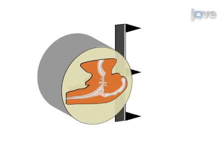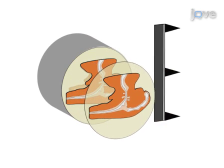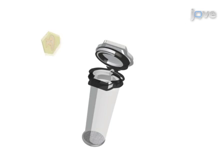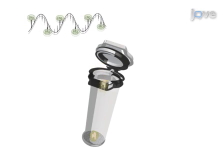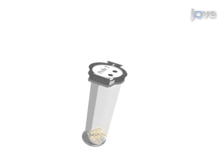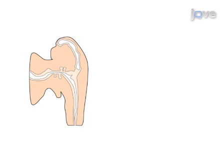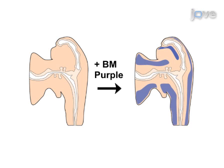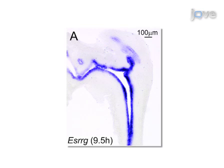The second step of the procedure is to generate thick cut sections using a vibrating microtome. The third step is to conduct an in situ hybridization in lower urogenital tract sections contained in customized baskets. The mRNAs are visualized through immunohistochemical detection of bound riboprobes using BM purple precipitating alkaline phosphatase substrate. Ultimately, microscopy can show the spatial and temporal localization of low and high abundance mRNA transcripts in the fetal mouse lower urogenital tract.